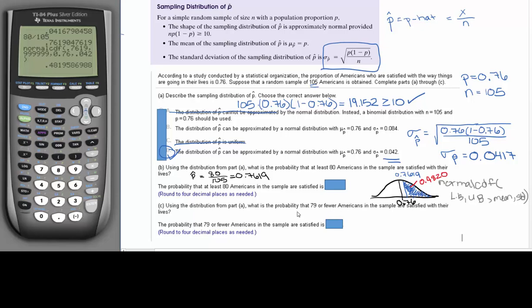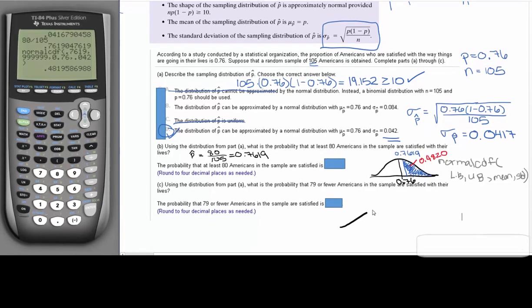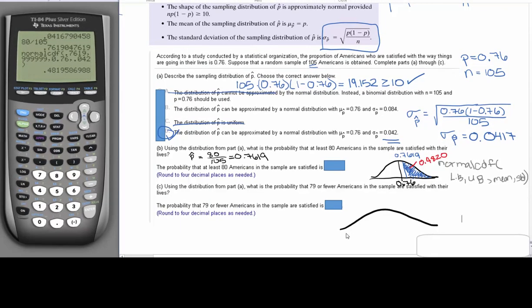Now, for part C, it's wanting us to do 79 or fewer Americans. So this is a very similar example. So we still have our normal curve, we still have 0.76 as our mean.